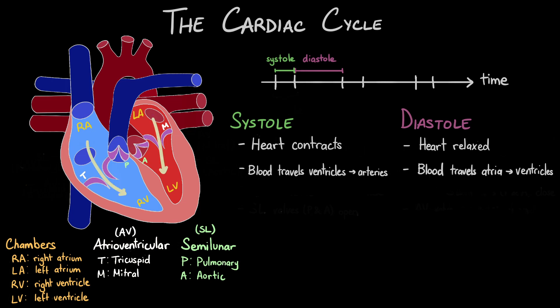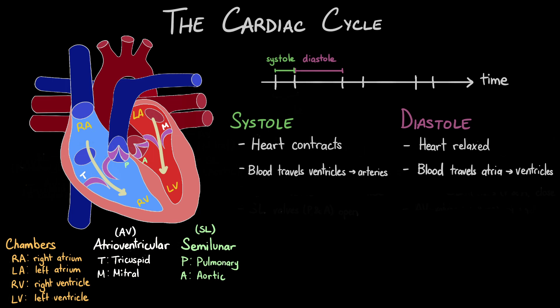Most of the blood — about 80% of it — will flow passively from the atria to the ventricles due to the atrioventricular valves being open. However, near the end of diastole, the atria will actually contract to help propel the remaining 20% of blood into the ventricles. To help you remember the difference between systole and diastole, you can remember that the ventricles dilate during diastole.